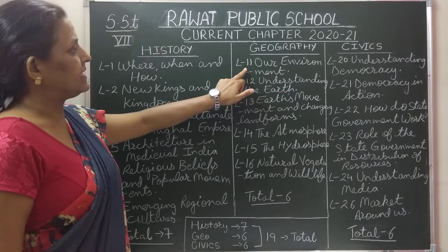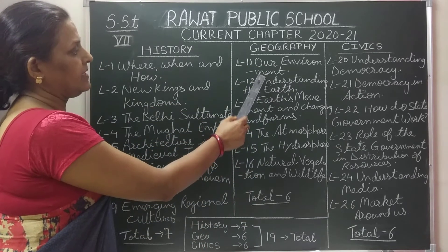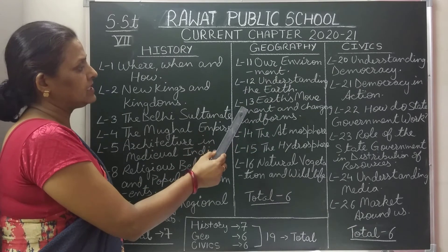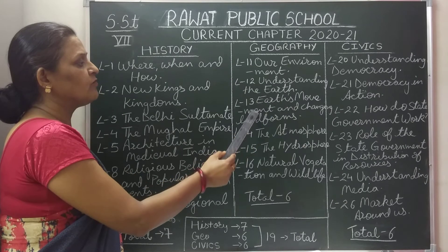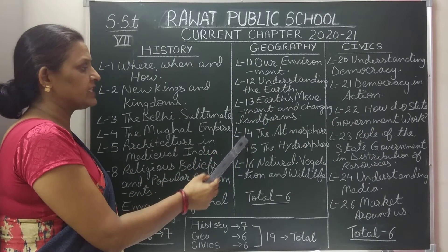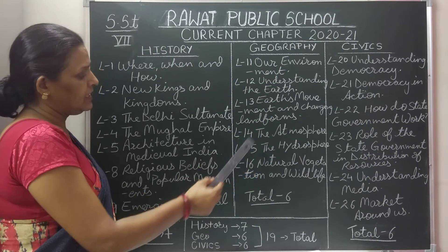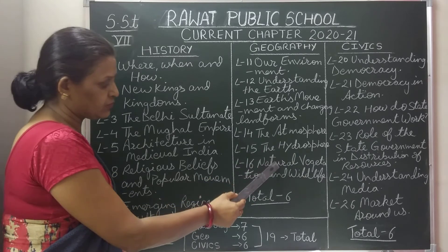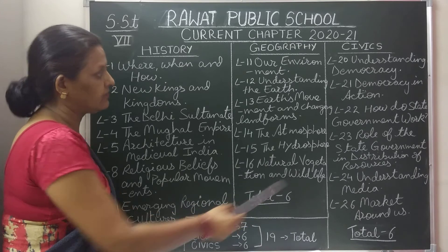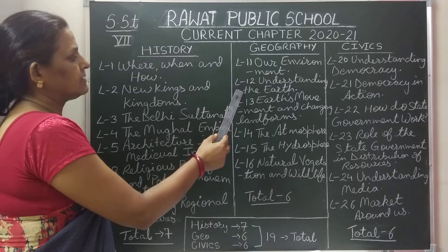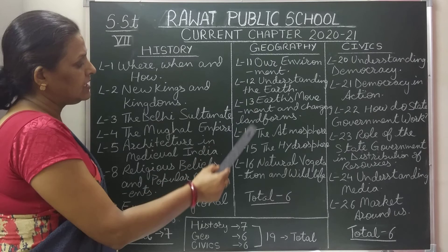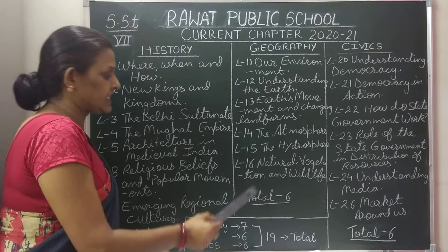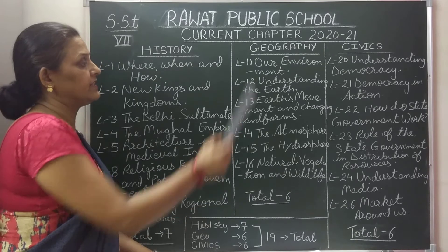Now, geography. Lesson number 11: Our Environment. Lesson number 12: Understanding the Earth. Lesson number 13: Earth's Movement and Changing Landforms. Lesson number 14: The Atmosphere. Lesson number 15: The Hydrosphere. Lesson number 16: Natural Vegetation and Wildlife. These are a total of 6 chapters we are going to study this year.